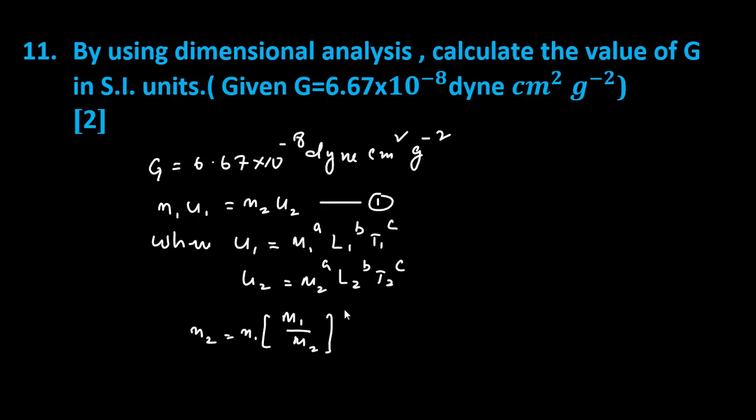Here, we know that the dimension of g is m to the power minus 1, l cubed, t to the power minus 2. That means, here a is minus 1, b is 3, c is minus 2.